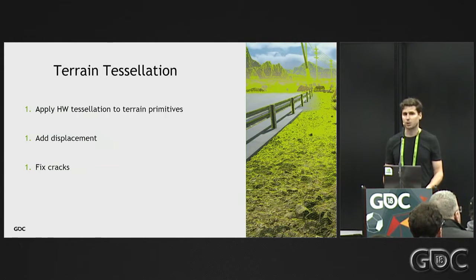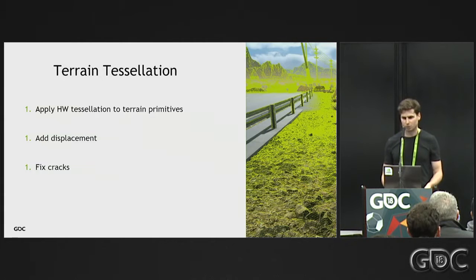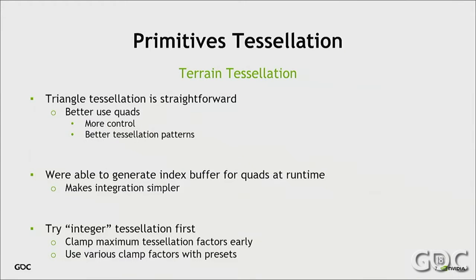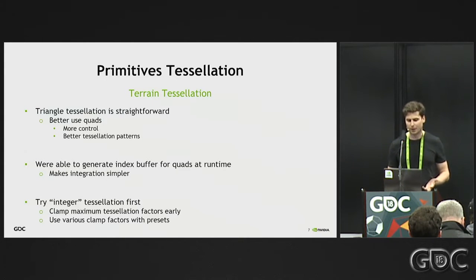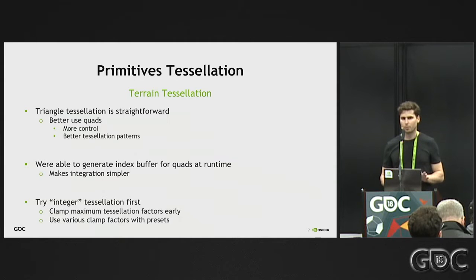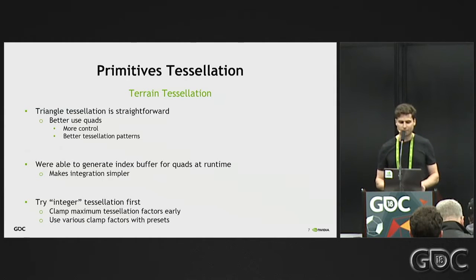If you don't see cracks immediately, don't be tricked — most likely you have to wait until the testers come and show them. Regarding tessellation, everything looks simple with triangles. Most likely you are already using triangle-based meshes, and applying triangle tessellation is trivial. But try to go with quads instead, because quads are a much better primitive to work with tessellation. They have more control because of an additional internal factor, and they produce better tessellation patterns than triangles.